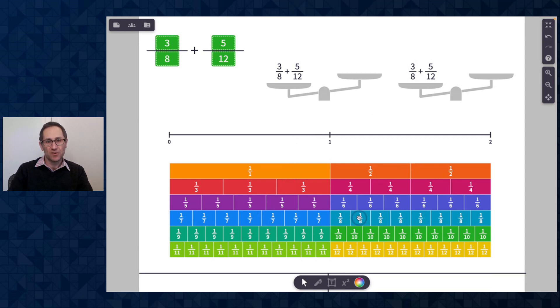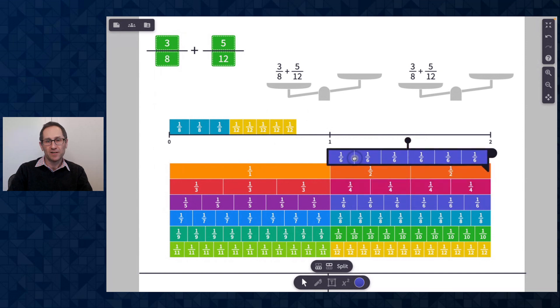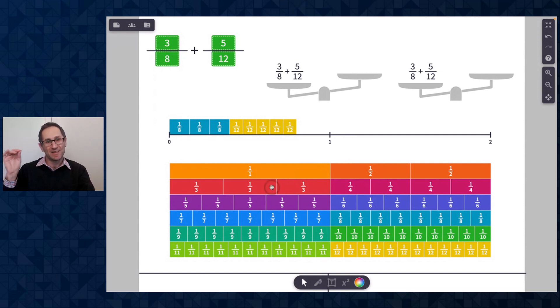And I'll build these on the number line with the fraction bars. So there is 3 eighths, and here is 5 twelfths. You'll notice on these fraction bars, when I click and drag, I get a copy of the fraction bar. So I've set these fraction bars to clone when moving, so students can't delete them by accident. They'll always be able just to pull off a copy. So here's 3 eighths plus 5 twelfths. I might make an estimate of this first.